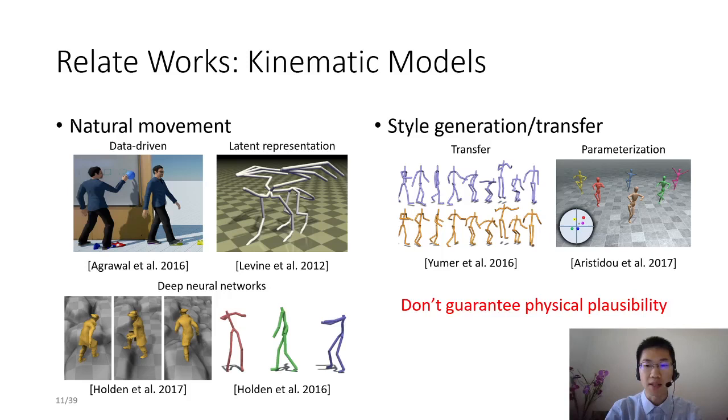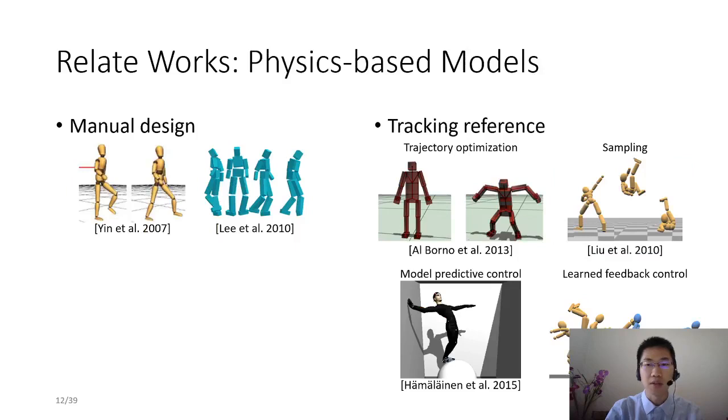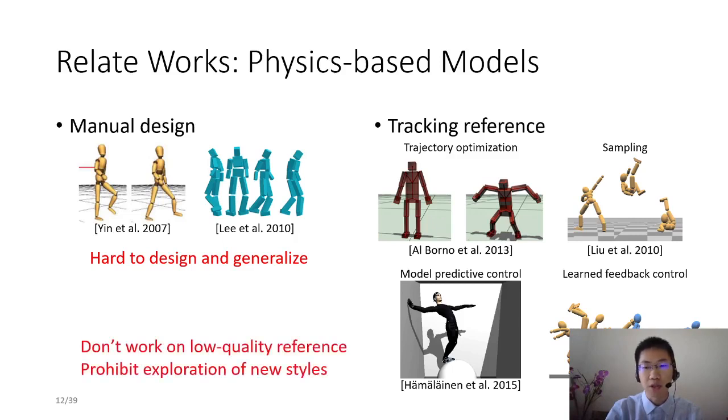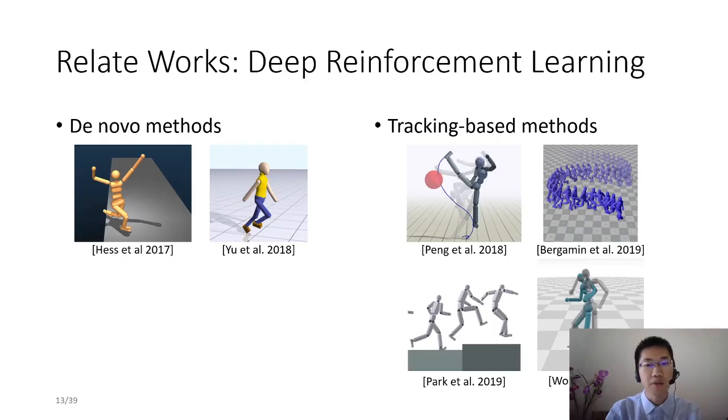Our work handles motion synthesis and style exploration in a physics-based framework. Physics-based models guarantee physical plausibility of synthesized motions but are usually hard to design or learn. Early works require manual work to design controllers and are hard to generalize to other motions. When reference motions are available, many methods can generate motions by tracking the reference. Tracking example motions, however, does not work on low-quality references and prohibits exploration of new motion styles.